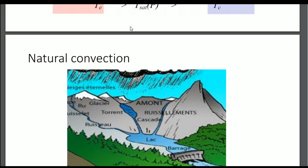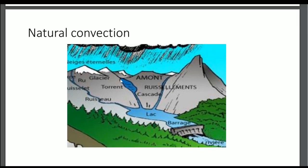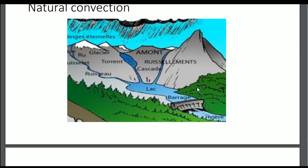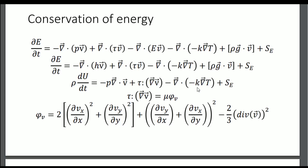Natural convection is typically what happens in a mountain. The altitude at the top is not the same as at the bottom; there are no engines, turbines, or pumps. The flow comes from a difference of altitude — potential energy — and a slight difference of pressure that we can sometimes neglect.